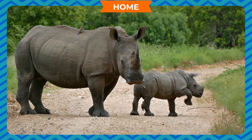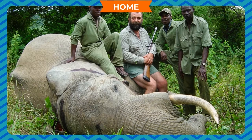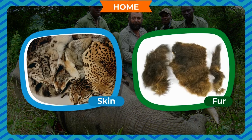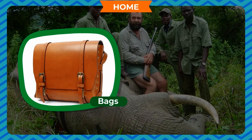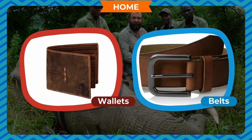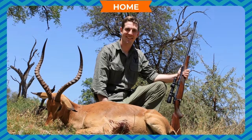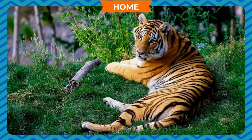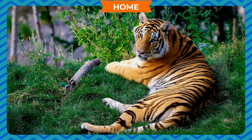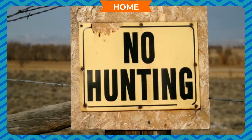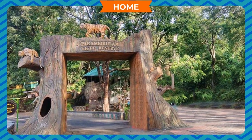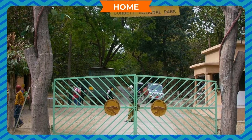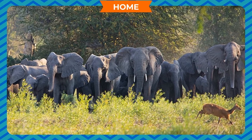Protection of animals. Wild animals are hunted to get their skin, fur, nails, bones, etc. to make bags, belts, wallets, and other items. Due to hunting and cutting of forests, their number is continuously reducing. The government has banned all hunting activities. Special protected areas such as national parks and wildlife sanctuaries have been developed, where wild animals can roam freely without being killed.